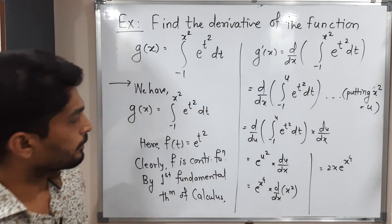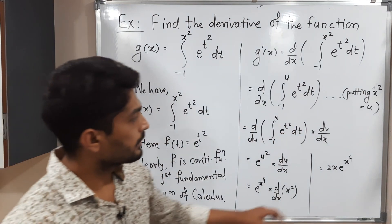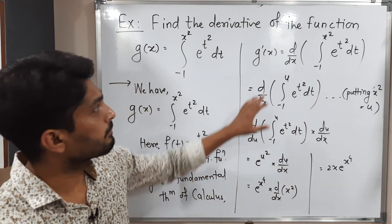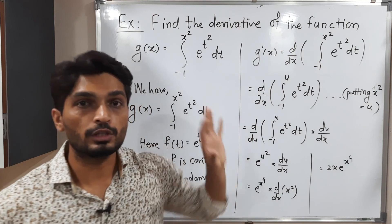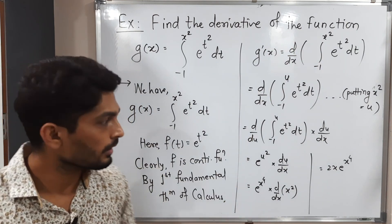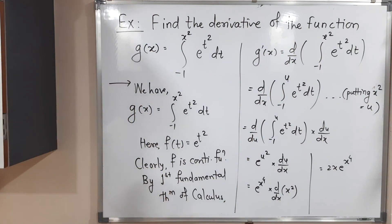I hope all of you understood. Because of this x square in the upper limit, we used the chain rule here. The answer is 2x e raised to x raised to 4. You can make a screenshot of it. Thank you. Bye bye.